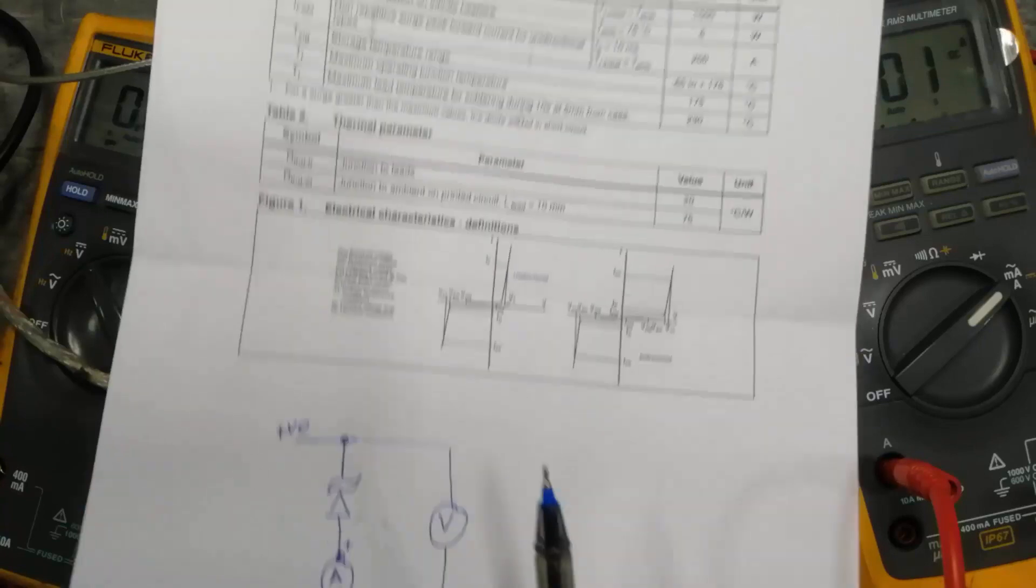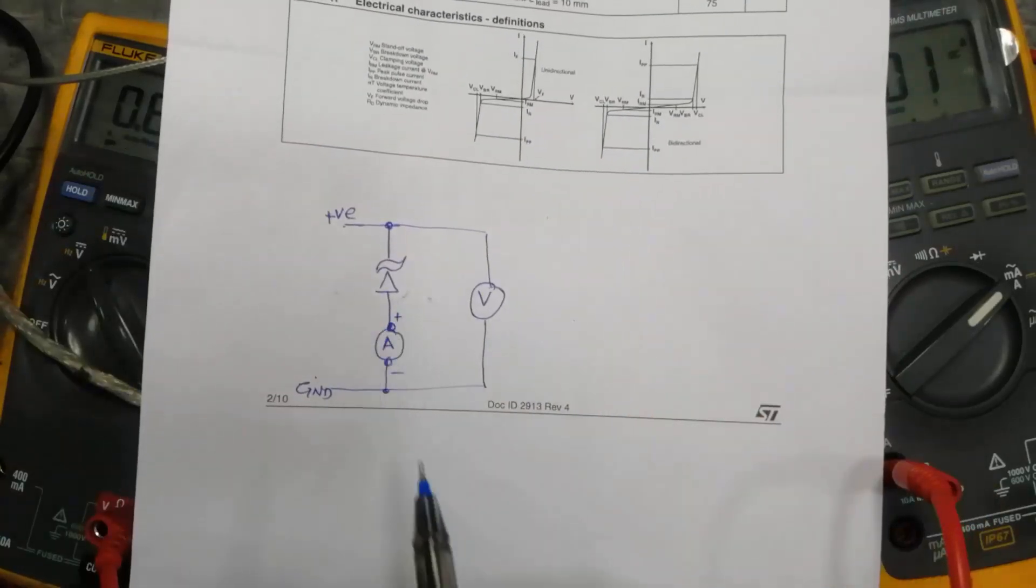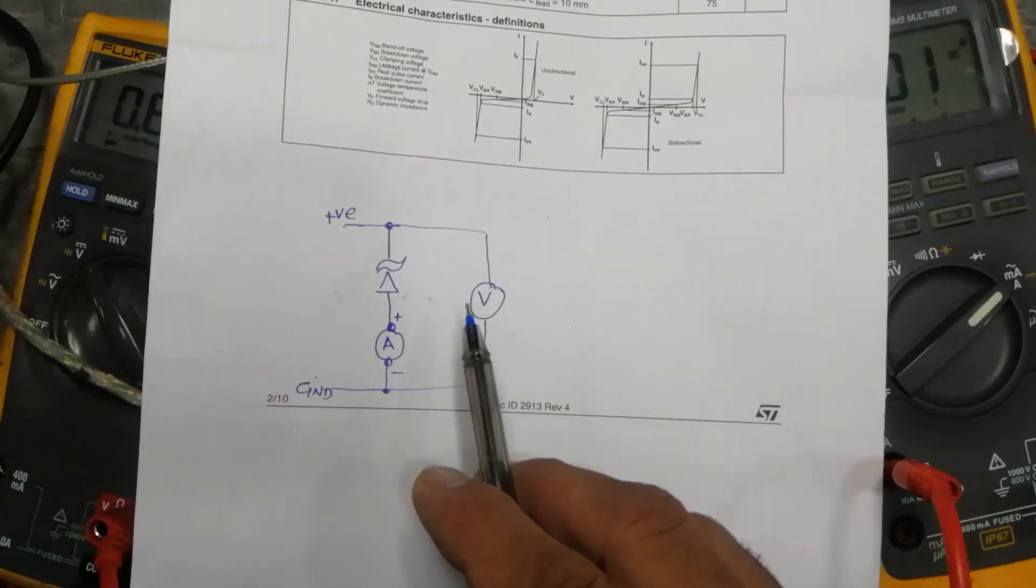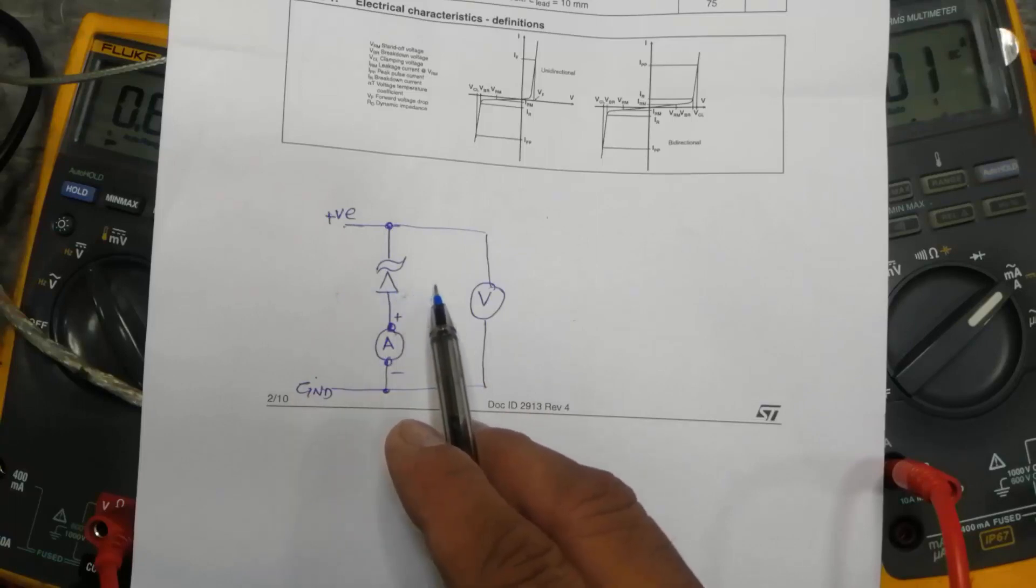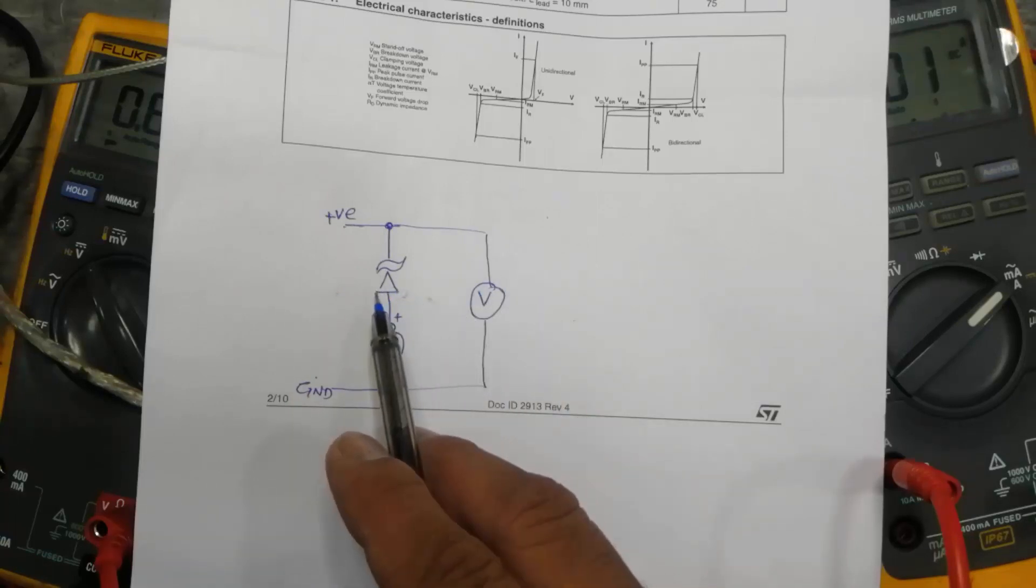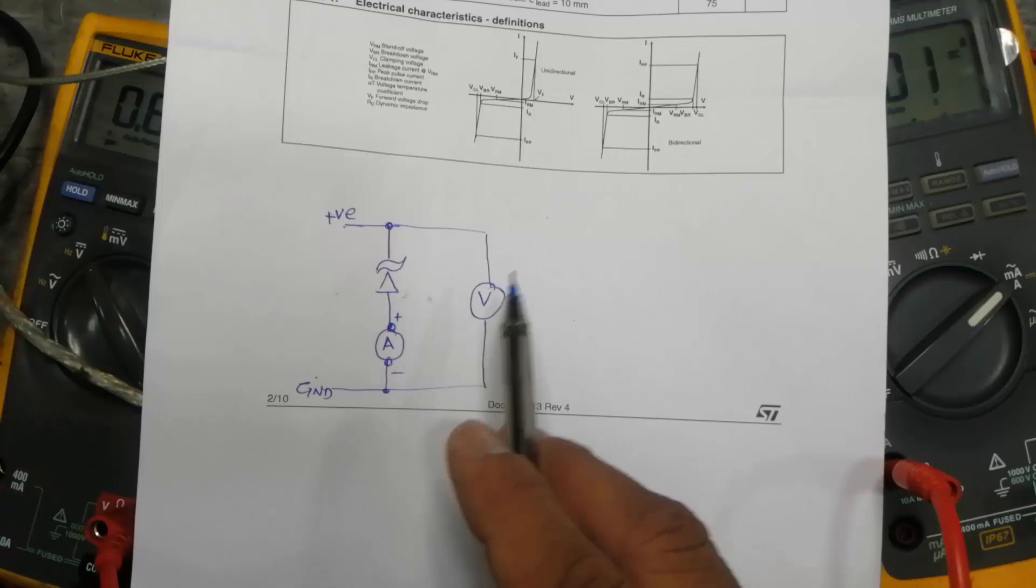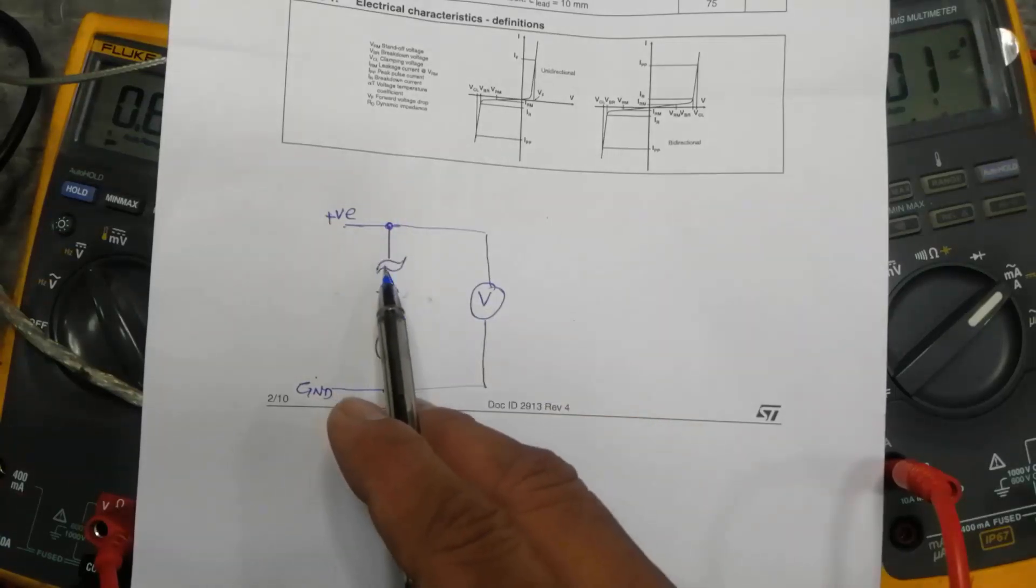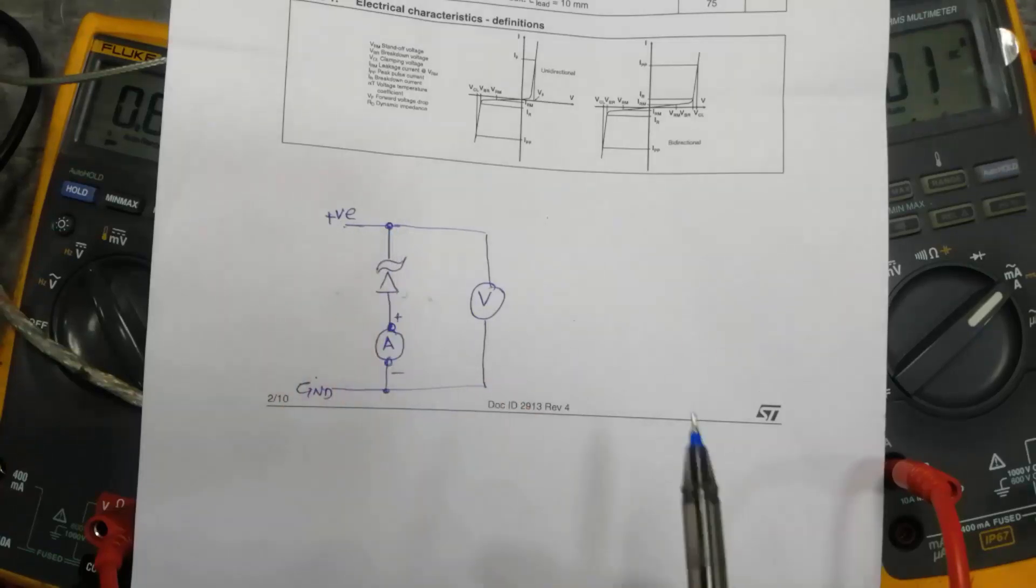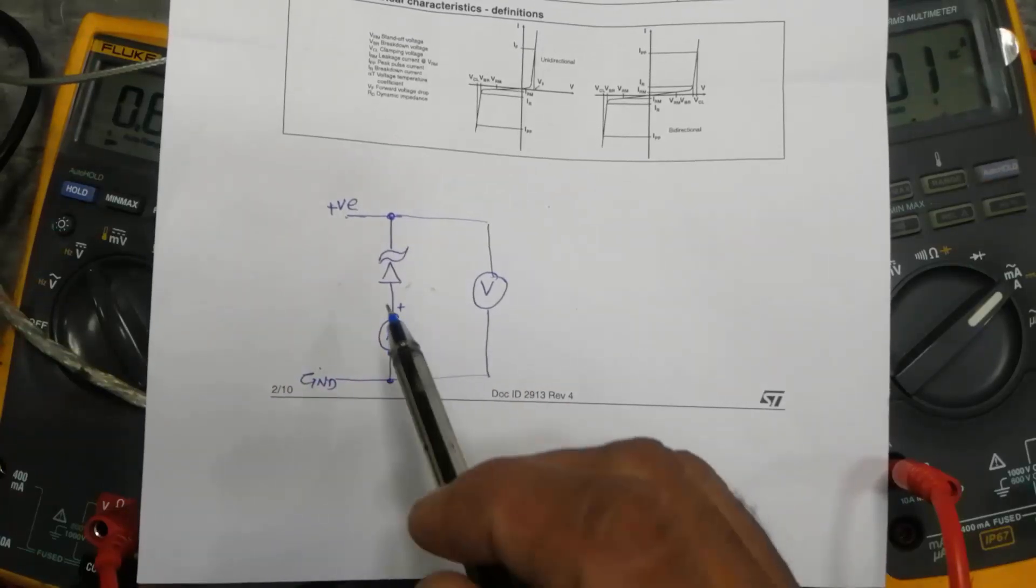A TVS diode is a protection diode used to protect any load. It is always connected across the load. When the voltage is less than its rated voltage, it remains like a silent device. When any transient voltage reaches this device, it will clamp. Let's discuss here.